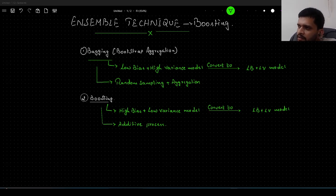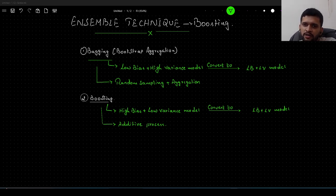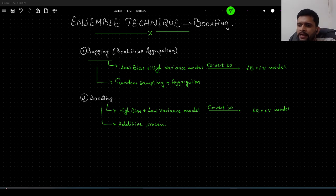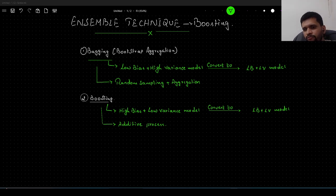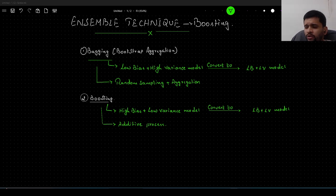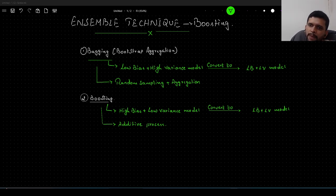Hello guys, in this video you will see another ensemble technique in machine learning called boosting. In my earlier video I had explained about bagging and given the brief intuition of that — a classic example for that was the random forest algorithm. In this video I will give you an intuition on what boosting is and how it differs from bagging. So, let us get started.